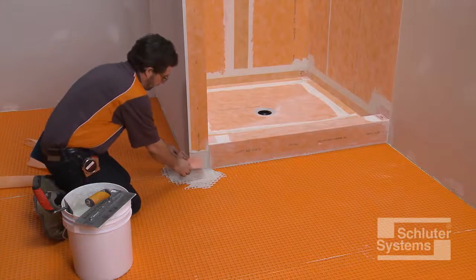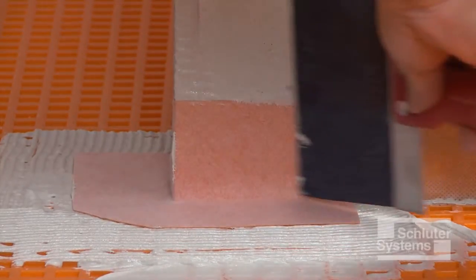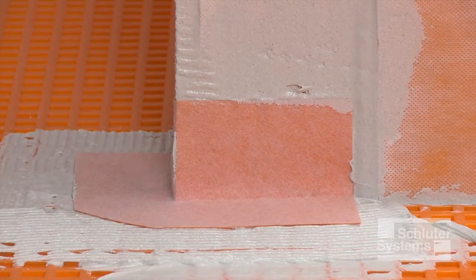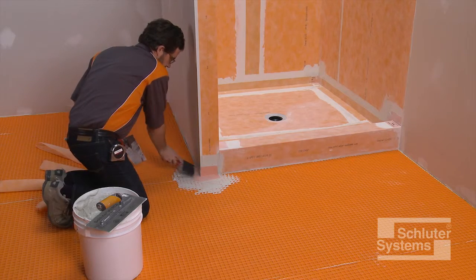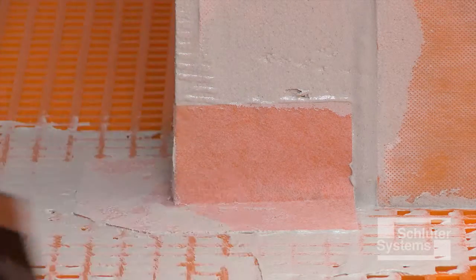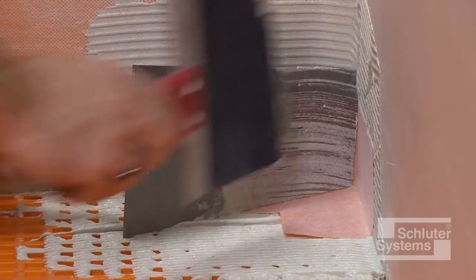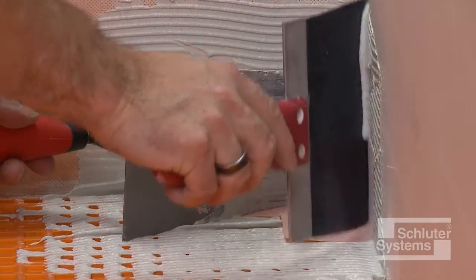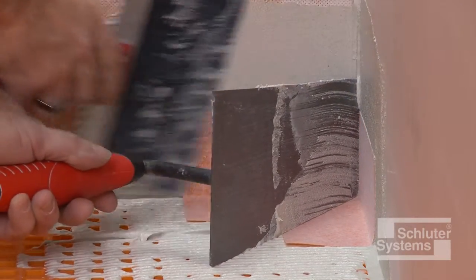Embed the KERDI carrick into the thin-set mortar using the flat side of the trowel or a drywall finishing knife. The corner installation may be simplified by holding one side of the corner in place while embedding the other side of the corner in the mortar.